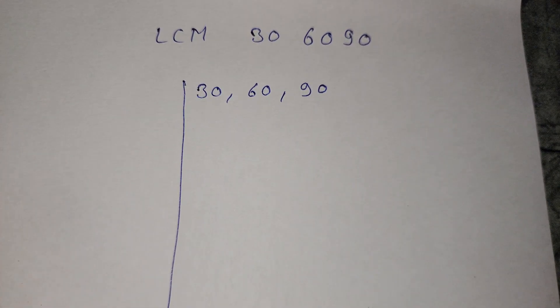We use the division method here. We find the factors - first we use 30, then 60, and then 90. So we start the factorial method.